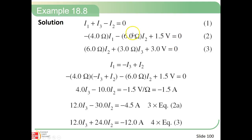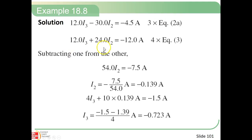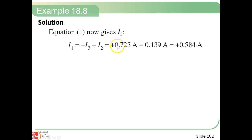We have the 1.5V on the left, the leftmost resistor, the middle resistor, the right resistor, and that EMF source. We can say I1 equals negative I3 plus I2, just rearranging the junction equation. Then we use the equations we have to solve simultaneously. After a lot of substitution, we've got two equations. Subtracting one from the other, we end up with a current of about 0.723 amps for I3, and about negative 0.139 amps for I2.